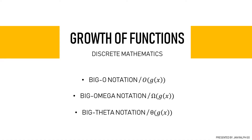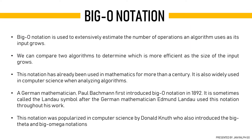Furthermore, these notations make us assume that the different operations used in an algorithm take the same time, which simplifies the analysis considerably. The big O notation is used to extensively estimate the number of operations an algorithm uses as its input grows. With the help of this notation, we can determine whether it is practical to use a particular algorithm to solve a problem as the size of the input increases. Hence, we can compare two algorithms to determine which is more efficient as the size of the input grows.